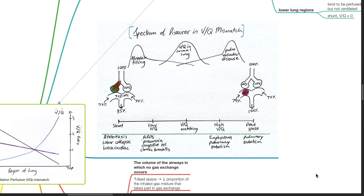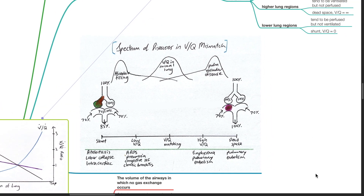This graph shows the spectrum of disease in VQ mismatch, with shunt on one end and dead space on the other. Shunt can occur due to atelectasis, lobar collapse, or intracardiac shunt. Low VQ can be caused by ARDS, pneumonia, congestive heart failure, and chronic bronchitis. High VQ ratio can be caused by emphysema and pulmonary embolism, and dead space can also be caused by pulmonary embolism.